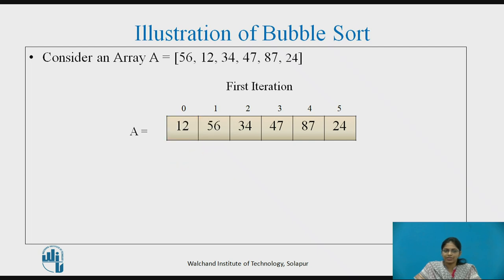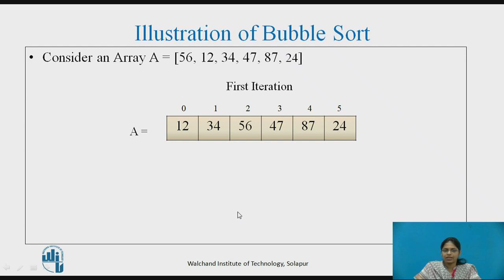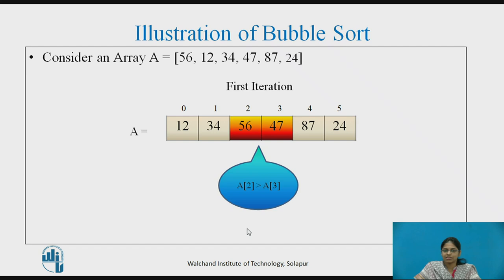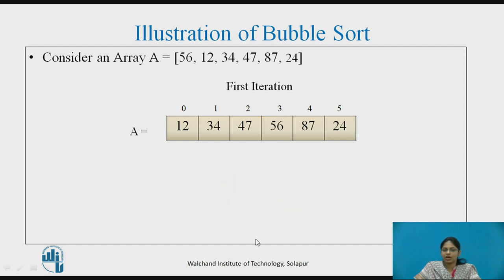After swapping, the comparison is done for the next two elements. Here we can see that A[1] is greater than A[2], so we need to do the swapping. After swapping, the comparison is done for the next two elements. Here also A[2] is greater than A[3], so again swapping is done. After swapping, the elements are placed in this new order.